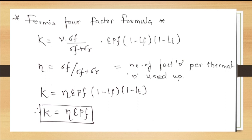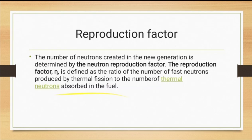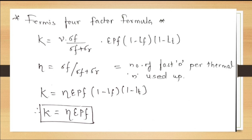When the fast fission neutron loss Lf and the thermal neutron loss Lt are very small, we neglect these terms. For a reactor of dimensions greater than a critical one, the loss of thermal as well as fast neutrons is nearly zero — that is, Lf equals 0 and Lt equals 0. The equation then becomes simply K equals eta into epsilon into p into f, and this equation is known as the four factor formula or the reproduction factor formula.